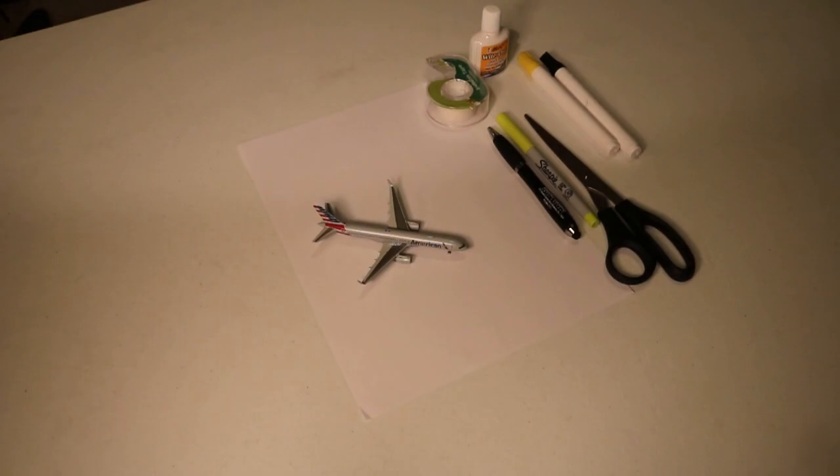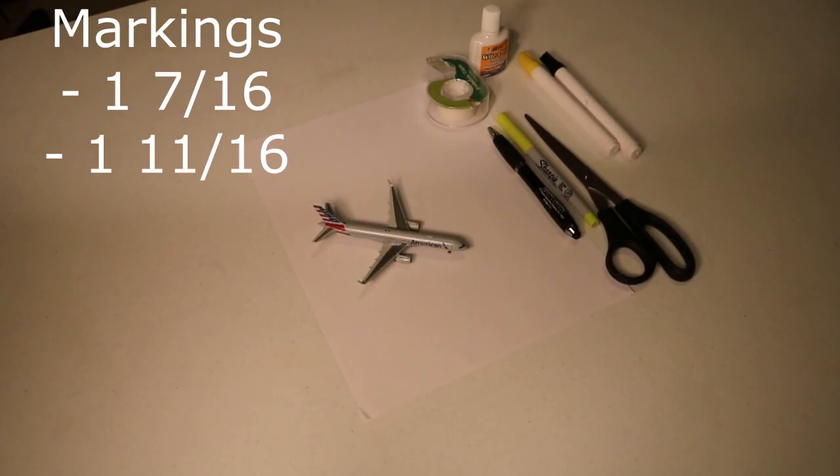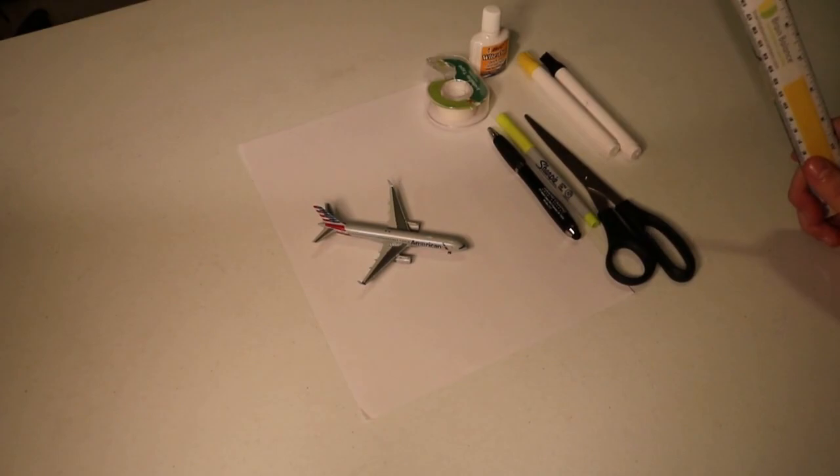The first thing you're going to do is I'm going to show you the markings on the ruler you're going to need. So there is two major markings that you're going to need. One of them is about an inch and nearly a half. It's right before the half. I will try to get the actual measurement on the screen for you guys of where that is on the ruler. And you're also going to need to mark the one right before the inch and three-fourths, that line right before the really small one.